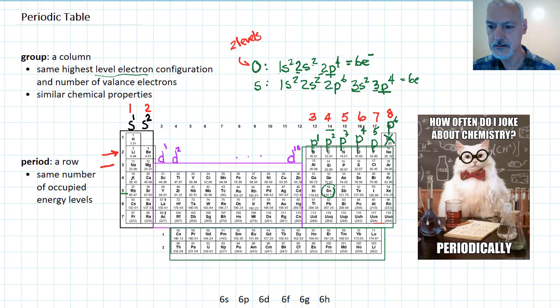Sulfur beneath it has three energy levels. And you'll notice that it's in that particular group. So it has three energy levels. So the period gives us the idea of the number of occupied energy levels.